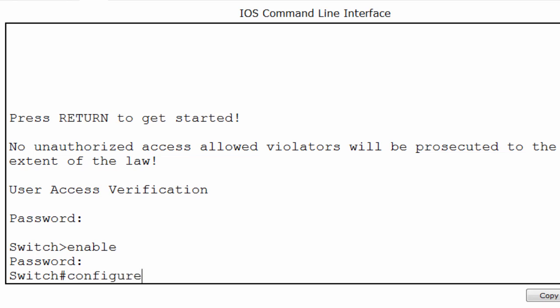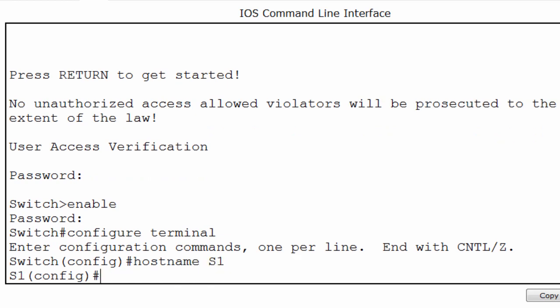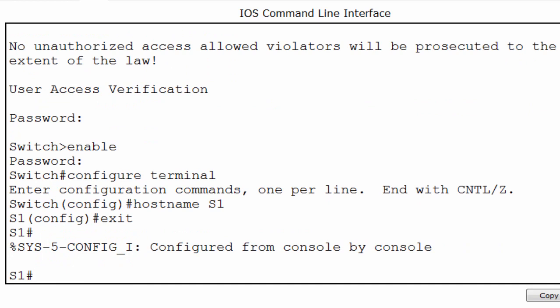I'll type configure terminal to get to global config mode and I'll set the hostname of the switch to S1. To save the configuration on the switch, I'll go back to privileged exec mode by typing exit and pressing enter. Then from privileged exec mode, I put in the command copy running-config startup-config. This command means copy the running configuration to the startup configuration file.